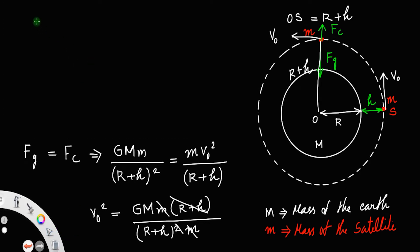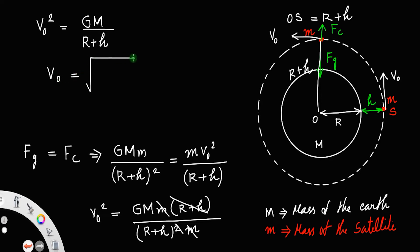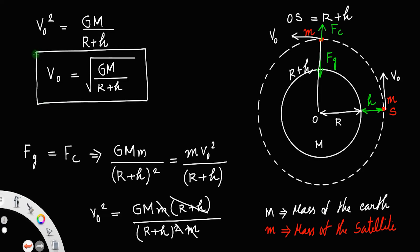Cancelling m and one factor of (R + h) from both sides, we get v₀² = G·M / (R + h), so the orbital velocity is v₀ = √(G·M / (R + h)). This is the expression for orbital velocity.